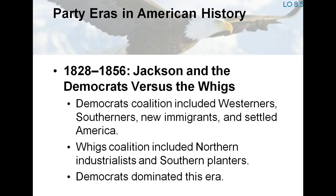1828 to 1856: Jackson and the Democrats versus the Whigs. General Andrew Jackson founded the modern American political party when he forged a new coalition in 1828. Jackson was originally a Democratic-Republican, but soon after his election, his party became known simply as the Democratic Party, which continues to this day. Jackson's successor, Martin Van Buren, argued that a governing party needed a loyal opposition to represent other parts of society. This opposition was provided by the Whigs, who could only win the presidency when nominating popular military heroes such as William Henry Harrison in 1840 and Zachary Taylor in 1848. The Whigs had two distinct wings — Northern industrialists and Southern planters — brought together more by the democratic policies they opposed than by issues on which they agreed.